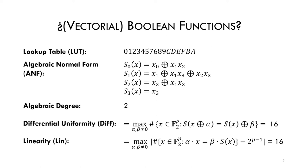We also care about some properties for cryptographic security. Two important properties are differential uniformity and linearity, which are used to indicate the resistance against respectively differential and linear cryptanalysis.